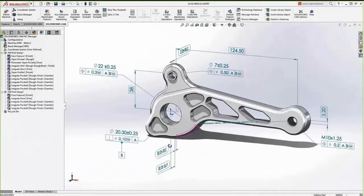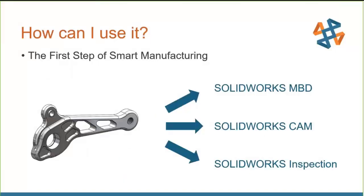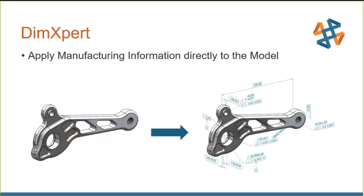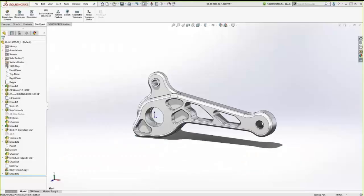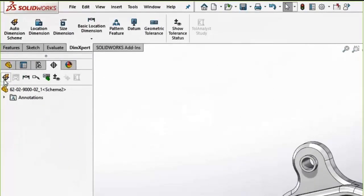Let's take a closer look at the hood hinge assembly, specifically one of the control arms. We're going to look at how to use MBD in this real-world model-based enterprise example. We'll walk through the life cycle beginning after design has been completed: applying MBD using SOLIDWORKS MBD, then taking those model-based definitions into SOLIDWORKS CAM and SOLIDWORKS Inspection, and see how it saves time in manufacturing and post-manufacturing QA. The first step in the model-based definition approach in SOLIDWORKS starts with DimExpert. Even if you've never used it, DimExpert has been in all versions of SOLIDWORKS since 2013.